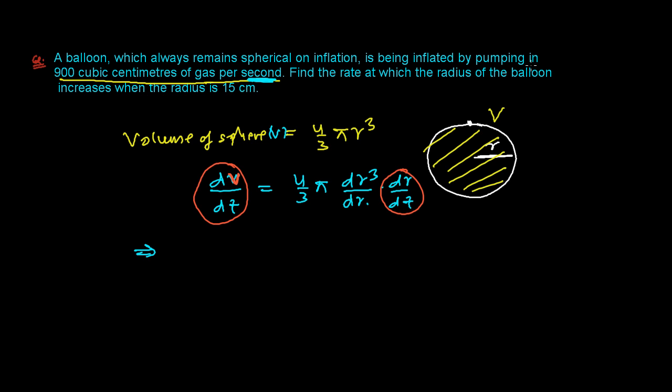It is being inflated by pumping 900 cubic centimeter of gas per second, so it is 900 cubic centimeter per second and it's 4 by 3 pi r cube, 4 by 3 pi and the derivative of r cube, it will be 3 r squared and just dr over dt is left.